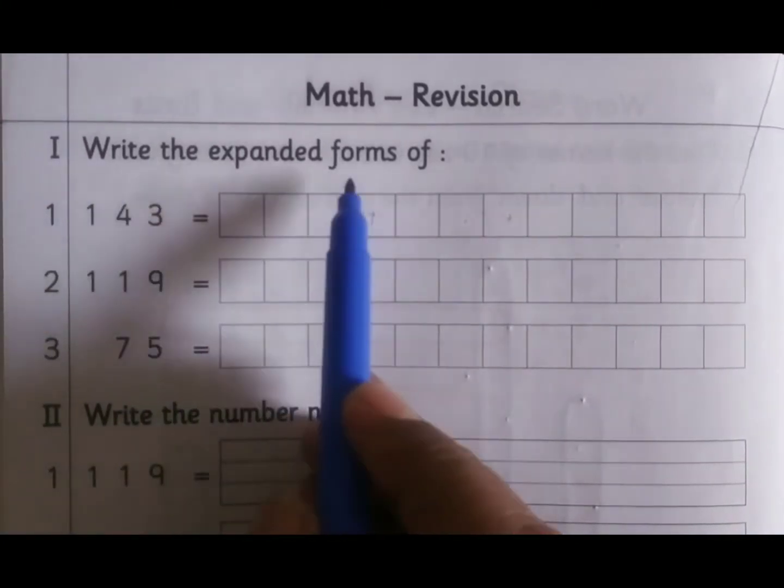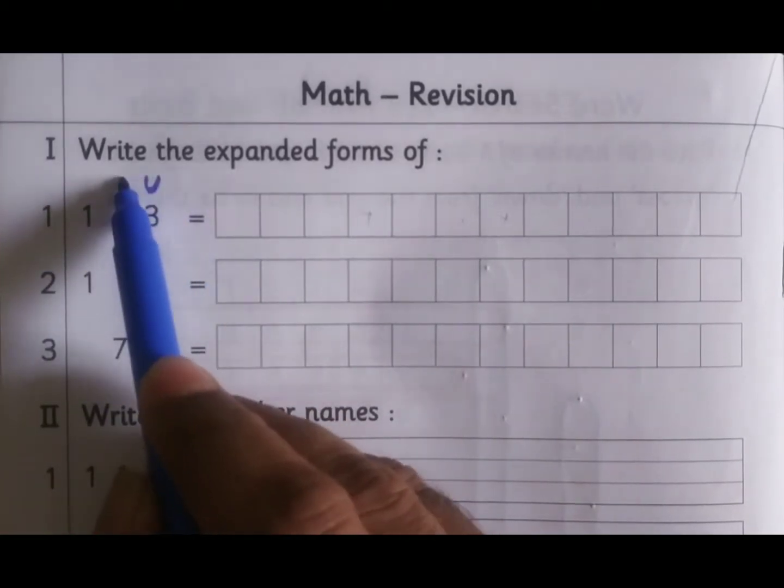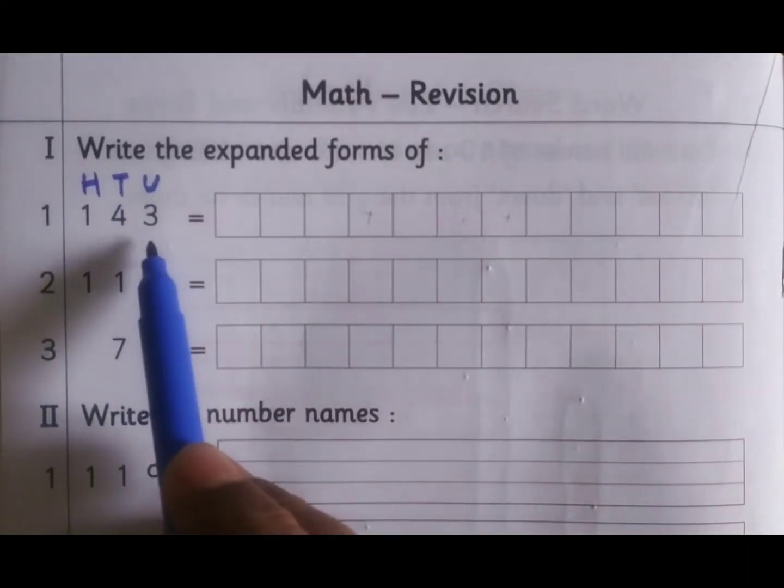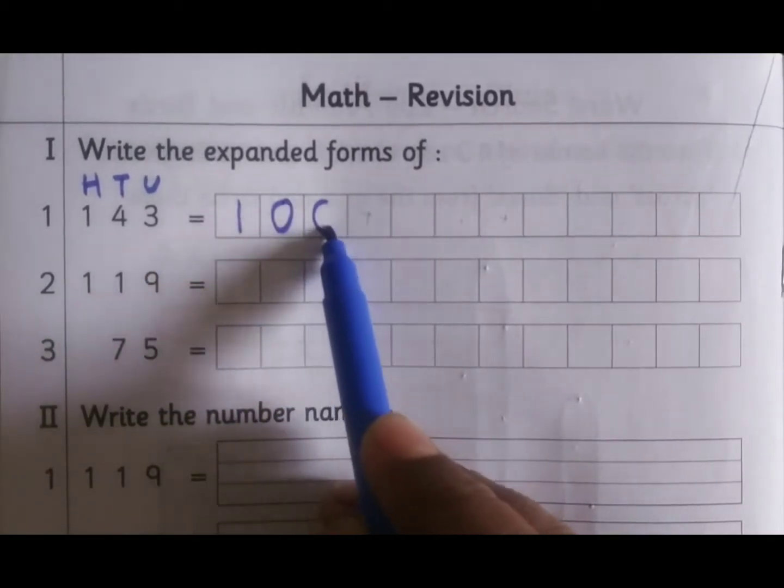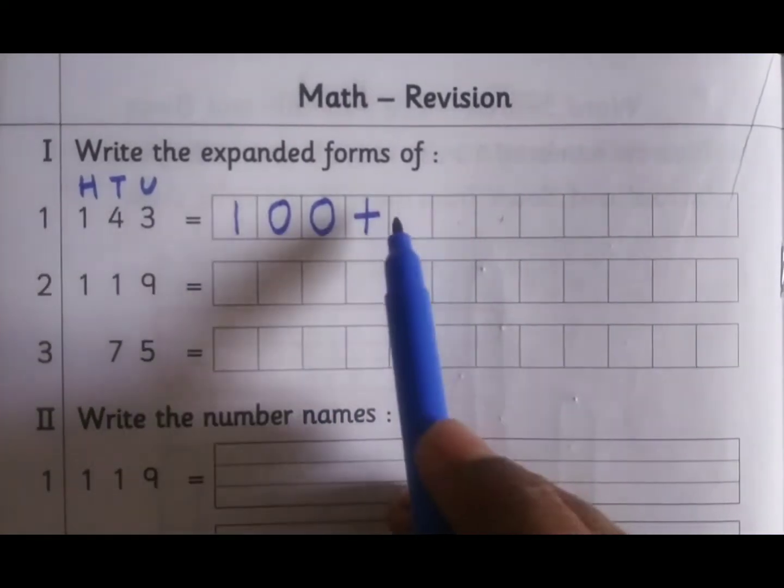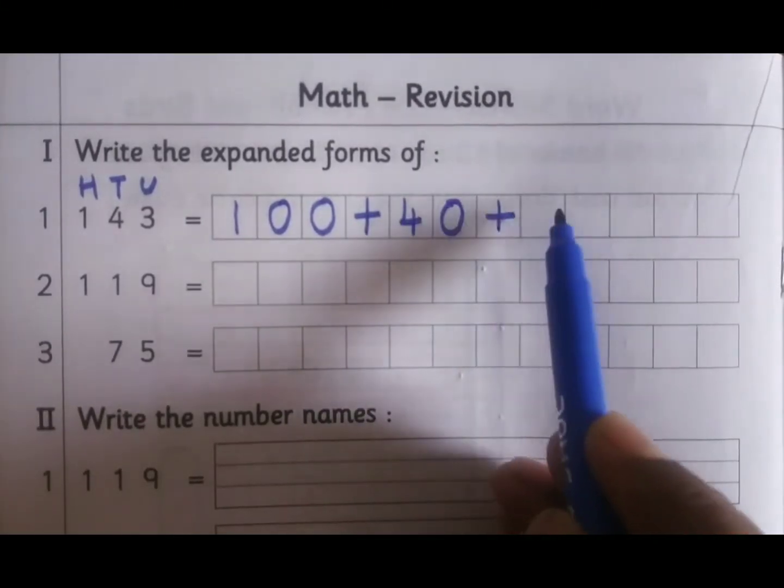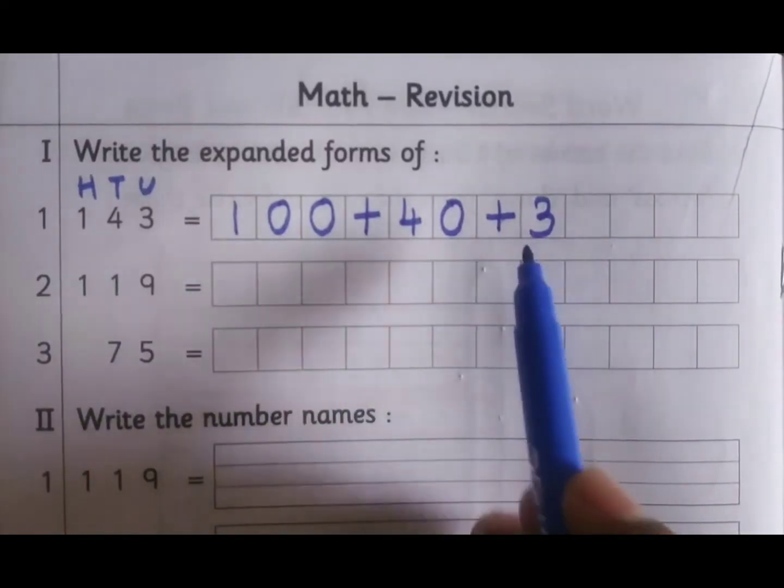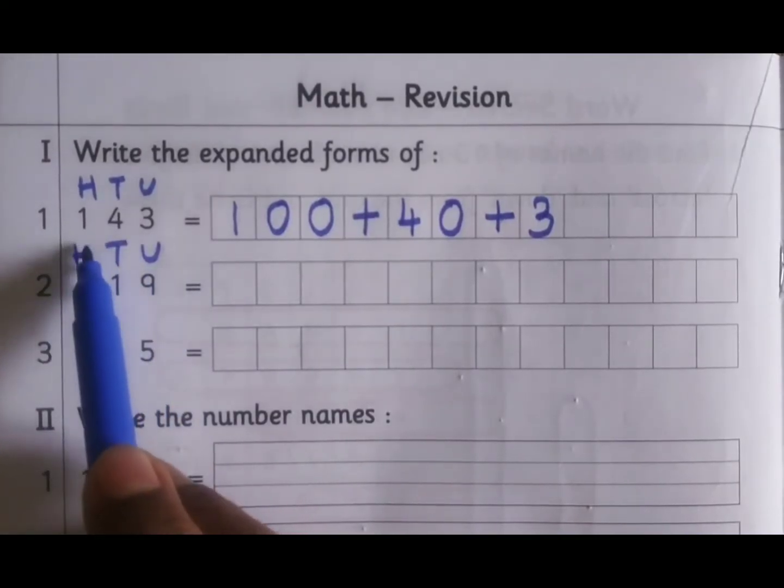Write the expanded forms of: First, write the place value. You read hundreds, tens, units. 143, so first write 100 plus 40. Four tens means 40, plus three units. 143. Second one, write the place values first then...